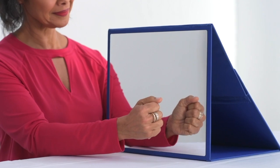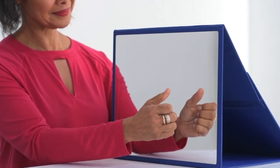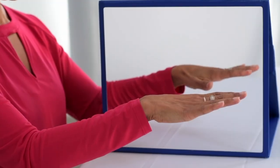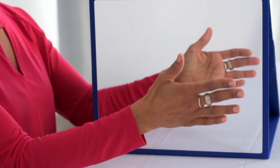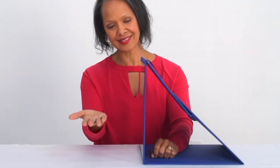With mirror therapy, the client performs repetitive, bimanual, if possible, symmetrical movements, moving the affected hand as much as he or she can while watching the reflective illusion of the unaffected hand from a mirror.